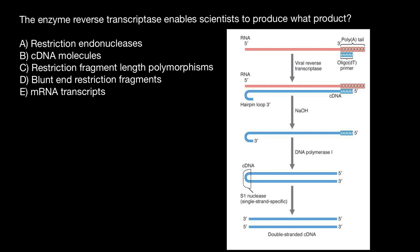Once the messenger RNA is dissolved away by sodium hydroxide, DNA polymerase one is added, which uses the double-stranded region as a primer for synthesis of a new DNA strand. The single-stranded portion of the loop is cut with S1 nuclease, and the result is double-stranded cDNA copy of the messenger RNA.